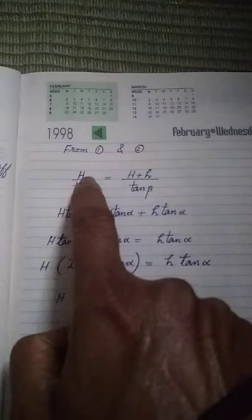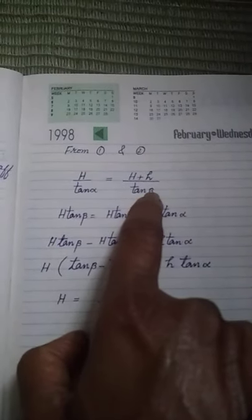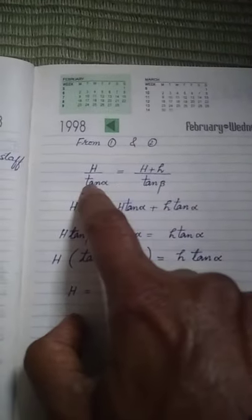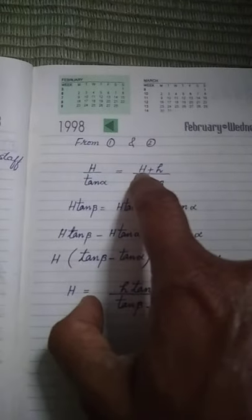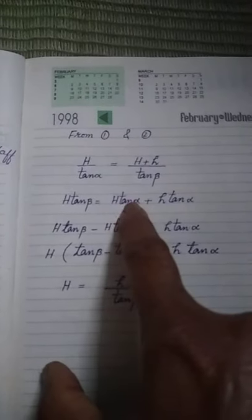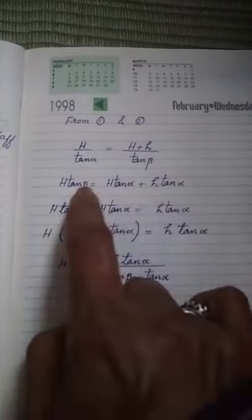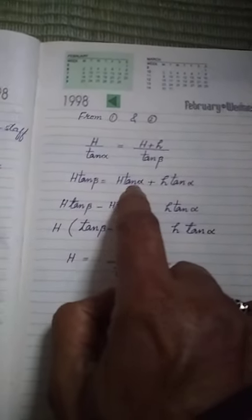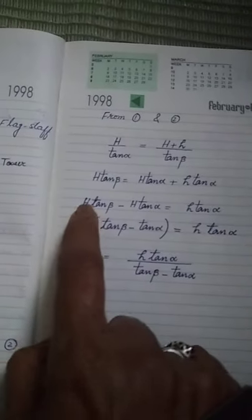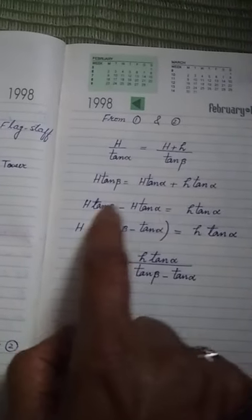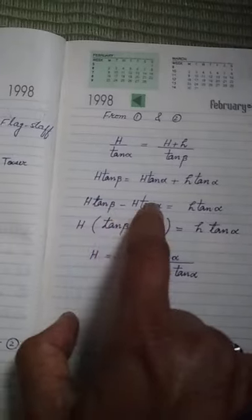So this capital H will be multiplied by this tan beta, and this tan alpha will be multiplied by each term. That means capital H tan alpha plus small h tan alpha. After that, we will take this capital H tan alpha to left hand side. So capital H is common.